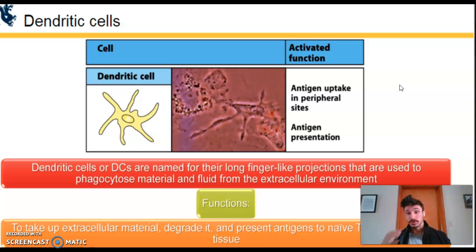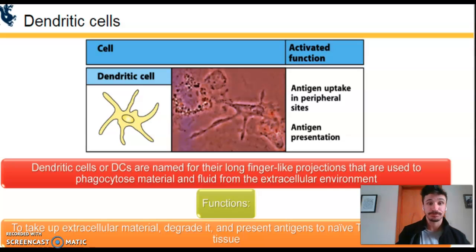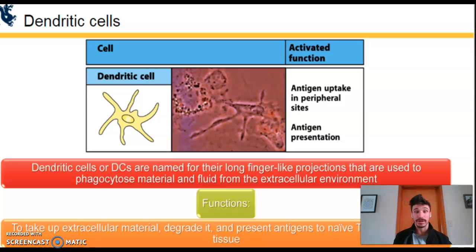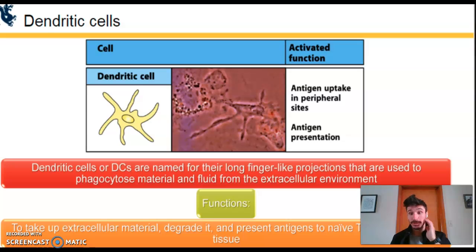Dendritic cells, also known as DCs, are the bridge linking the innate immune system to the adaptive immune response. They take in invading pathogens, break them down in the phagosome, and present the resulting antigen fragments on their cell membranes. They then travel to lymph tissue where T cells reside and present these antigens, initiating the adaptive immune response and generating memory. Some viruses, bacteria, fungi, and parasites produce better memory responses than others.